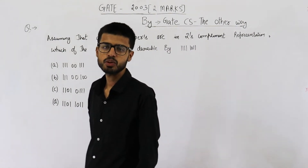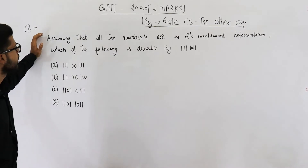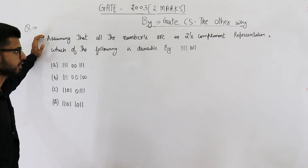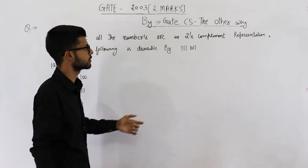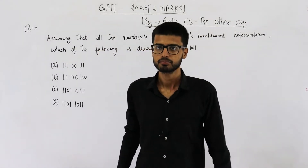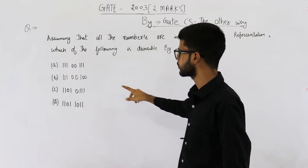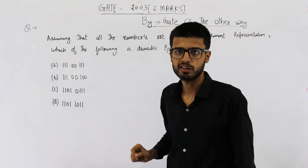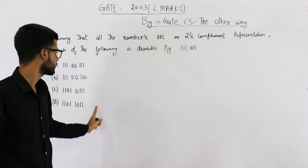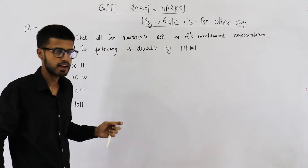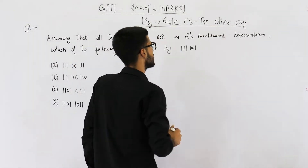Hello students, welcome back. This question is from the GATE 2003 exam. They're asking: assuming that all numbers are in two's complement representation, which of the following is divisible by the given number? You can see the given number as well as all the options start from one — the most significant bit is one — meaning this number and all four options are negative numbers.